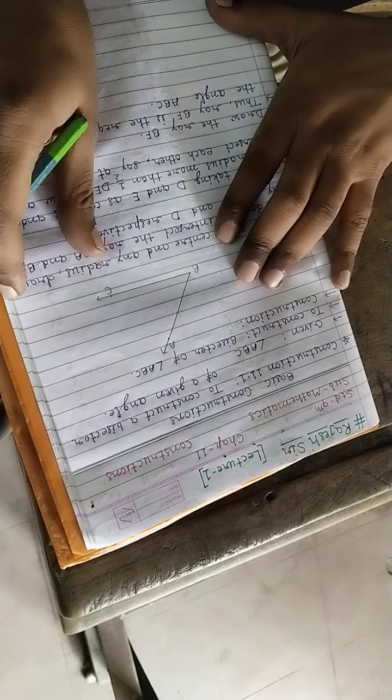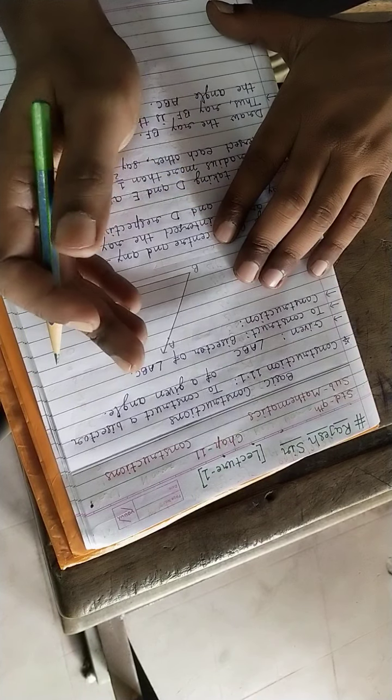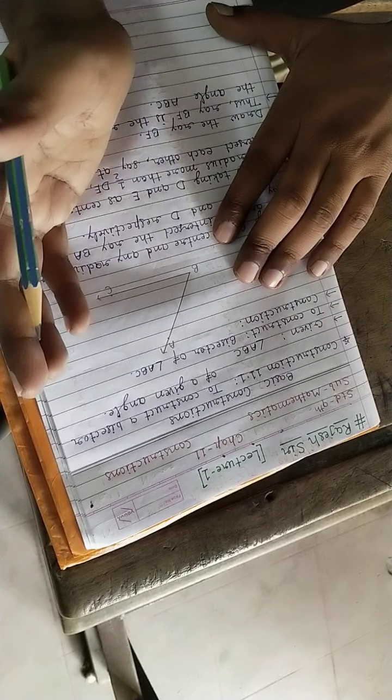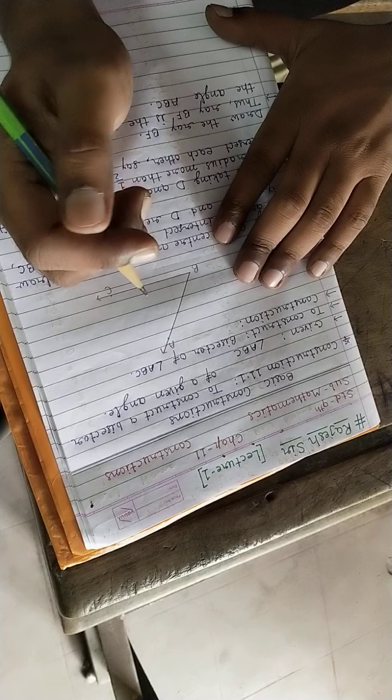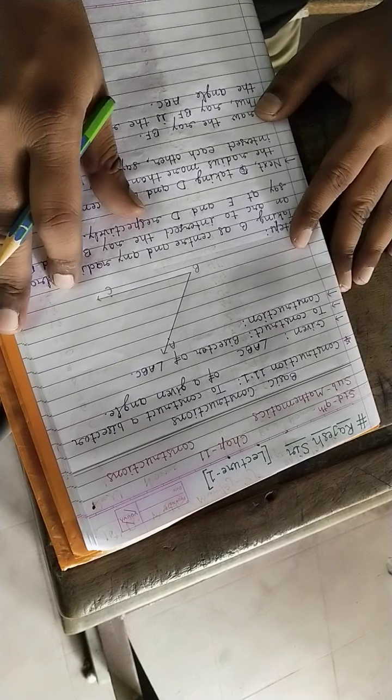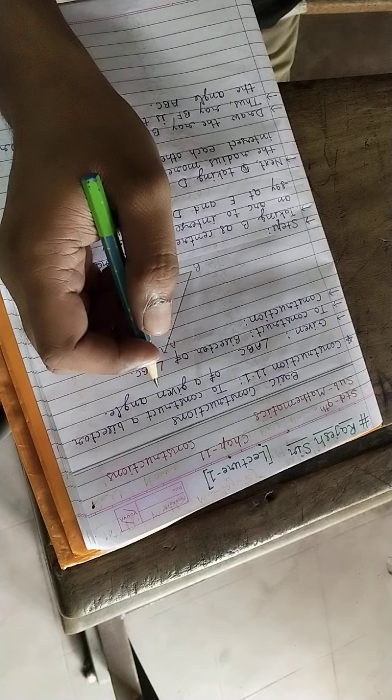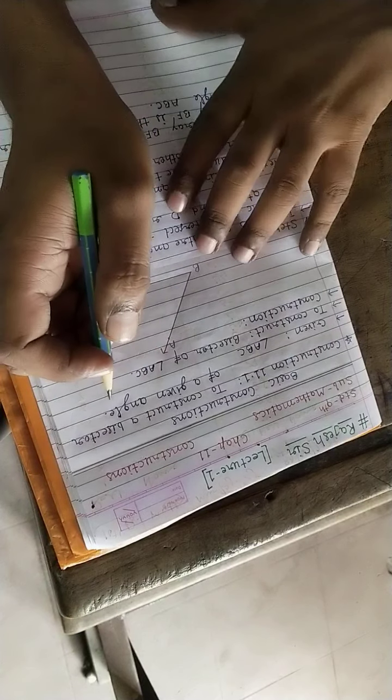About construction, in earlier classes we have seen how to draw different types of angles, how to draw the bisector of an angle, and how to draw the bisector of a given line segment. We will recall some knowledge about construction in this lecture.